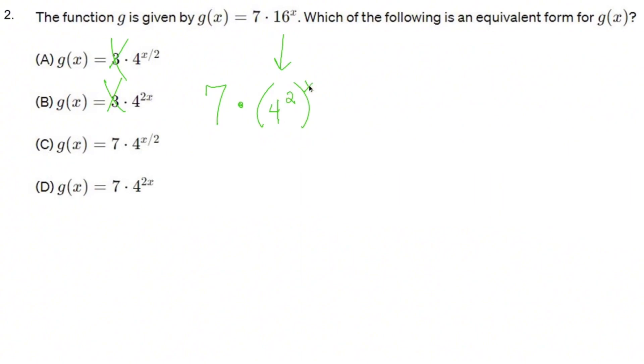I think I said that right, you multiply the exponents. So I could rewrite this as 7 · 4^(2x).